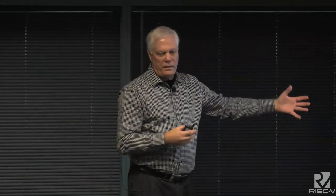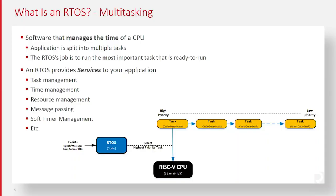What I like about this drawing is it shows that an RTOS is event-driven. An event comes in — an interrupt service routine or any other type of event, whether it's a task sending a message or signaling another task. The RTOS's job is to choose the next most important task that's ready to run. Here's a linked list of all the tasks ready to run, and the RTOS picks the most important one.